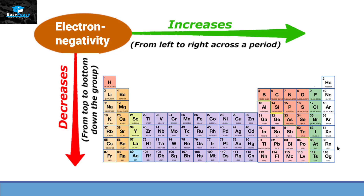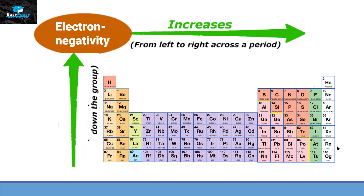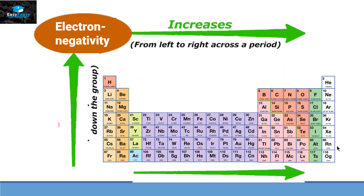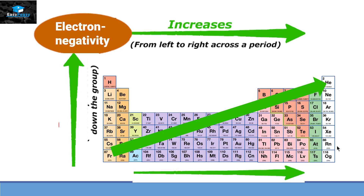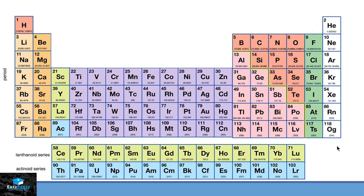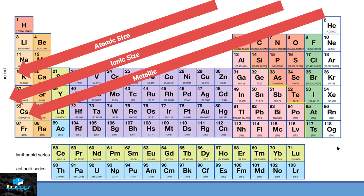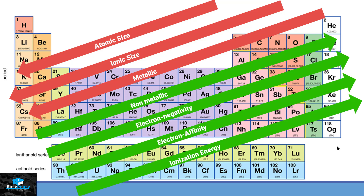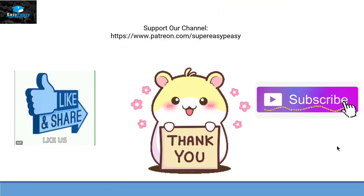There is another way to visualize these trends. If we draw an arrow going down the group and another going across the period, we can summarize: the size of the atom and metallic character increase towards the left and bottom, while non-metallic character, electronegativity, electron affinity, and ionization energy all increase towards the right and top. By looking at this picture, you can easily memorize the trend of each category in the periodic table. That's it for now — thank you very much for watching. If you like it, please subscribe to our channel. Bye-bye.